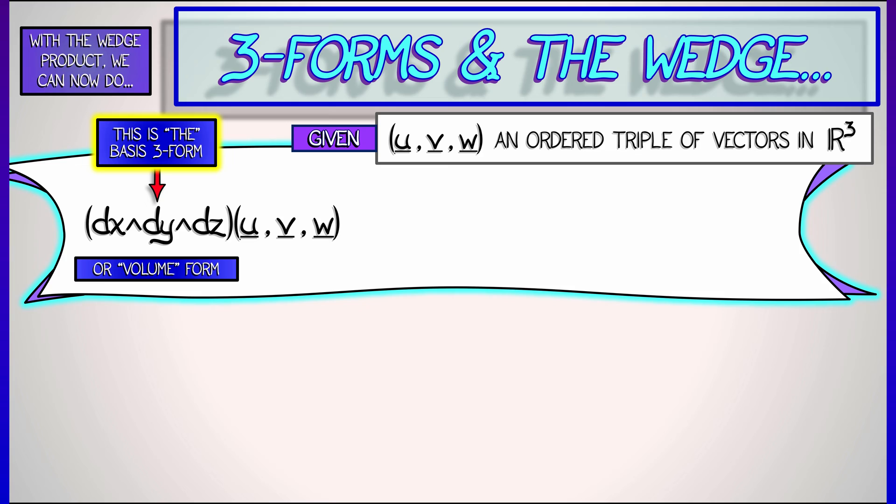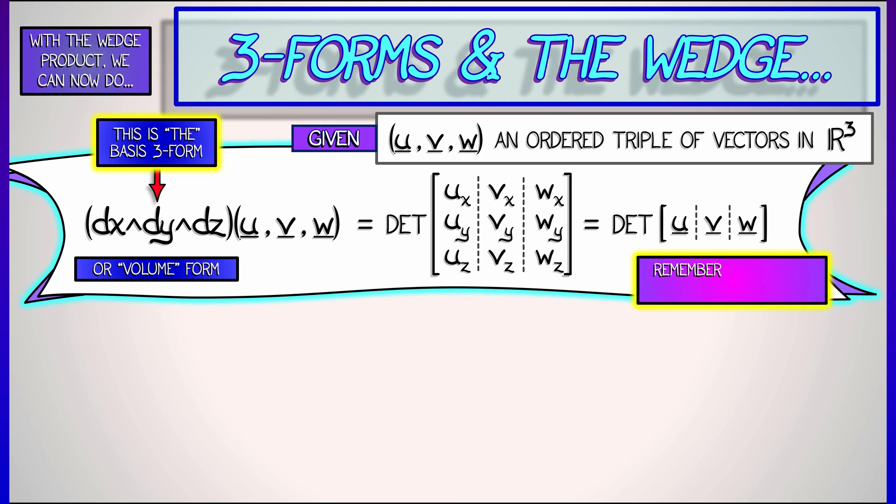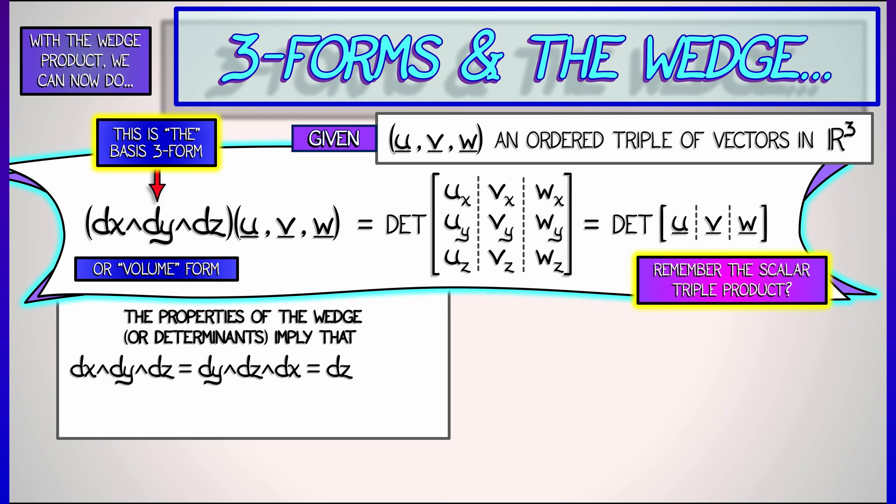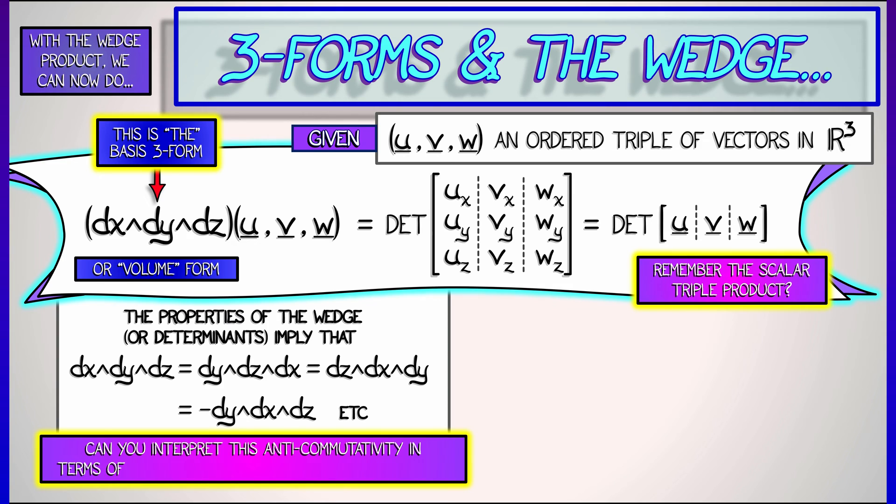If I feed it these three vectors, u, v, and w, what do I do? If I follow my nose, it seems like we should be taking the determinant of the three by three matrix that has rows equal to the x components, y components, and z components in that order. This is just the determinant of the matrix that has these three vectors as columns. If you remember the scalar triple product back from volume one, that's exactly what this basis three form is doing. This all has to do with the algebra of determinants and thus with the algebra of the wedge product. But there's more to it than just algebra. We can think about this in terms of the geometry of determinants as well, because the scalar triple product was giving us an oriented volume in 3D.